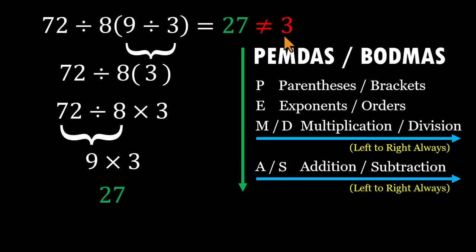27, not 3. This is why these expressions trip people up. Not because they're difficult, but because our brains love shortcuts, even when the math doesn't allow them.